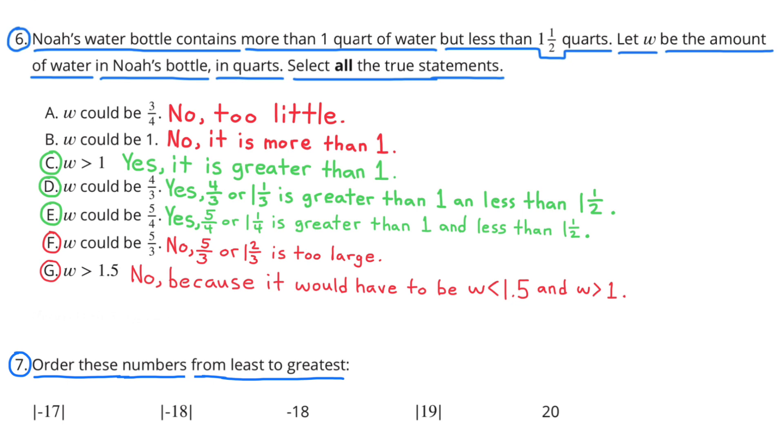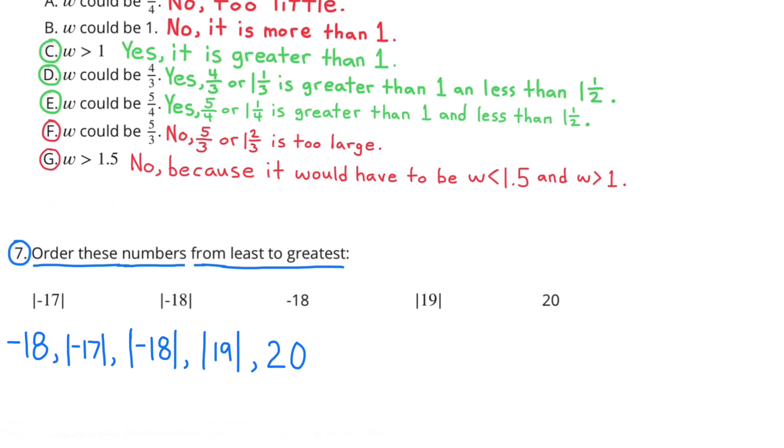Problem 7: Order these numbers from least to greatest. The smallest value is negative 18, followed by the absolute value of negative 17, which has a value of 17. Next would be the absolute value of negative 18, which has a value of 18. Then the absolute value of 19, which has a value of 19. And then finally 20, which of course has a value of 20.